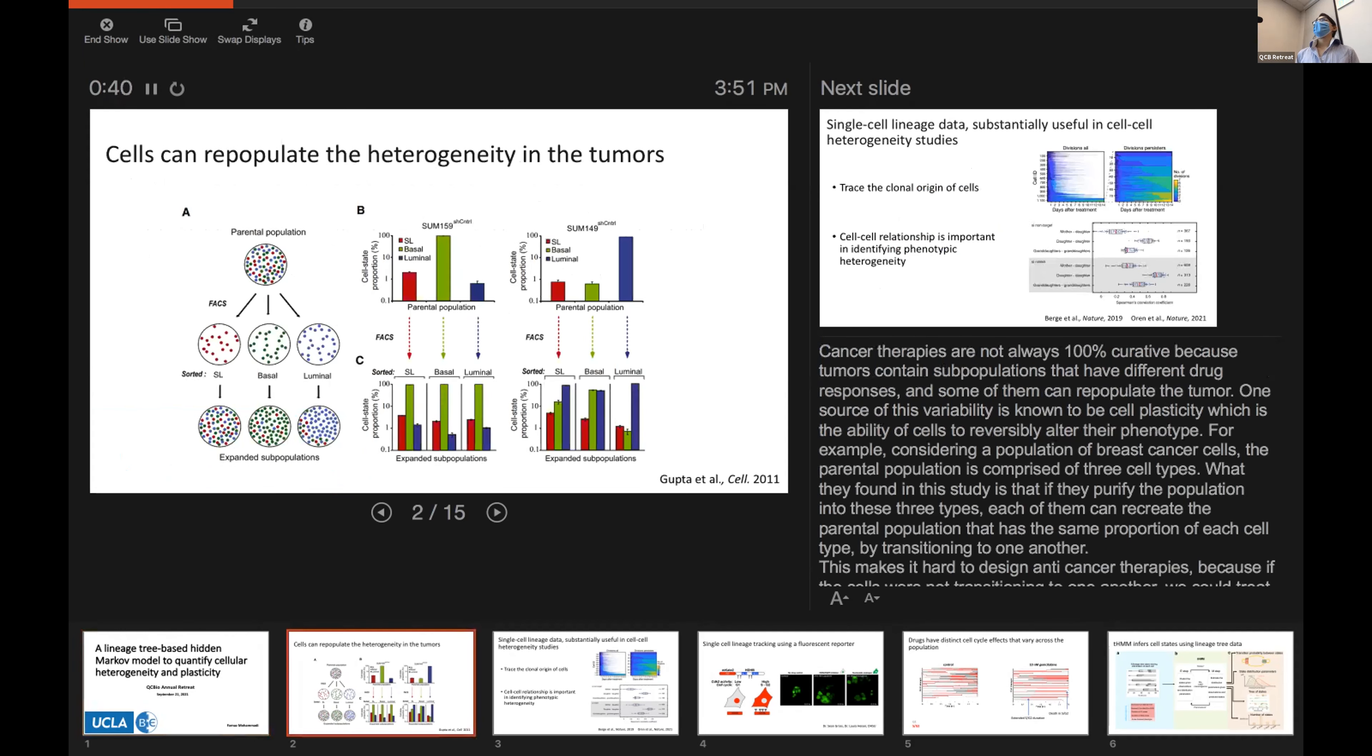Cancer therapies are not always 100% curative because there is often a subpopulation of cells that respond differently to the drug, and some of them could repopulate the tumor. One of the sources of this variability is cell plasticity or the ability of cells to alter their phenotype reversibly.